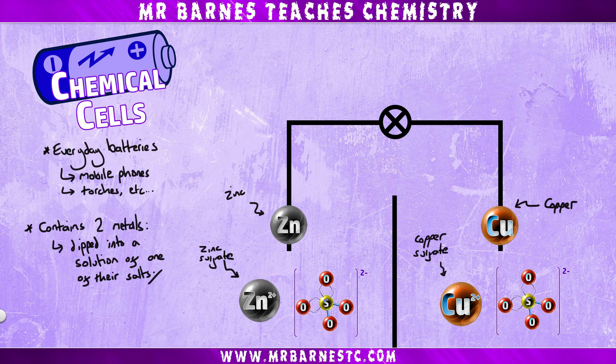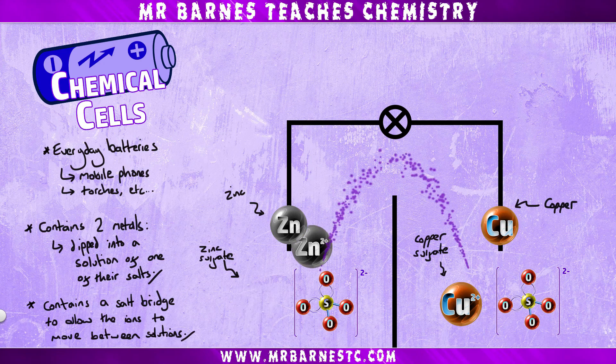The second thing a chemical cell must contain is a salt bridge, which is something that allows the ions to move between solutions, as you can see here.